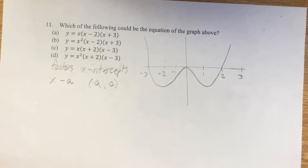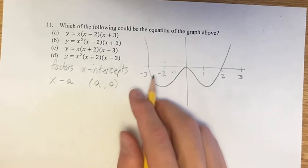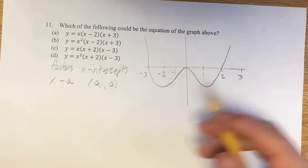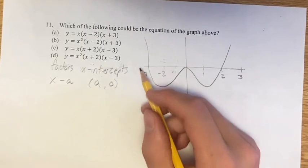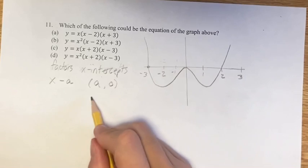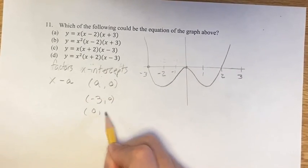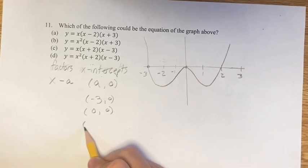So our x-intercepts for this function are where the function hits the x-axis. So we have right here at negative 3, 0, here at 0, 0, and here at 2, 0.